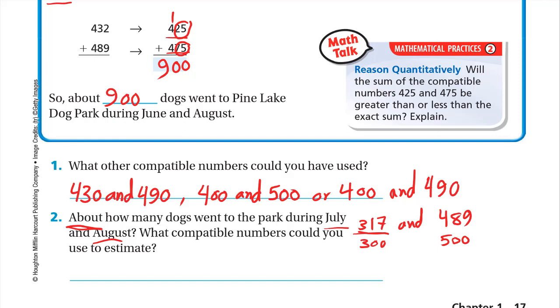317 is close to 300, and 489 is close to 500. If we add 300 plus 500 we will get 800. The compatible numbers that we used are 300 plus 500. You can have a lot of answers here. Someone may say 325 and 500, so the answer will be 825. This is correct also.